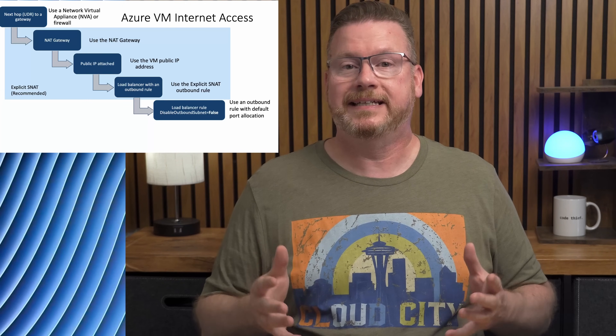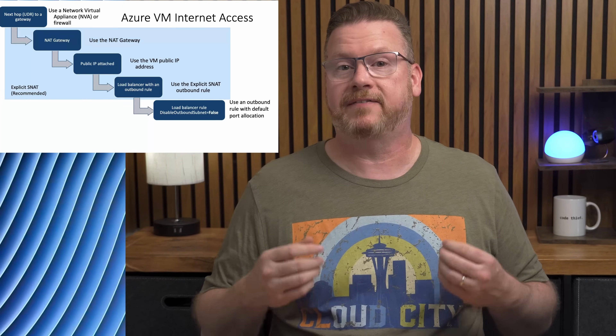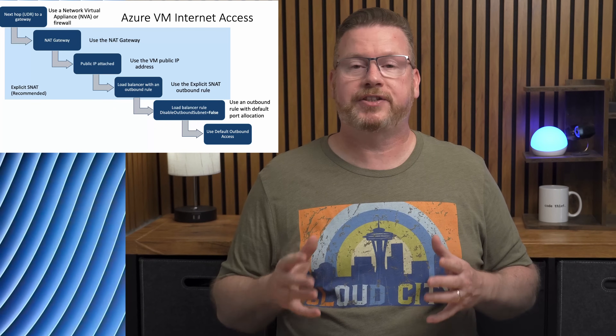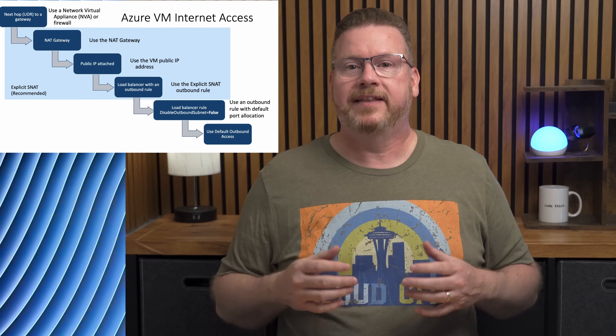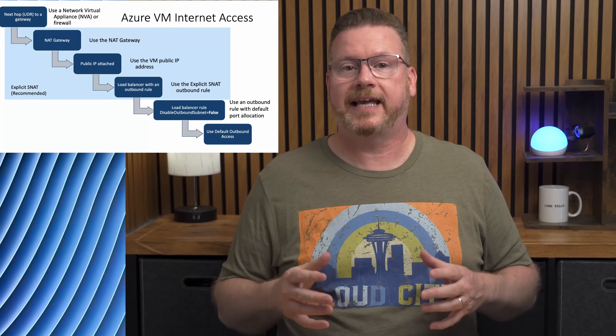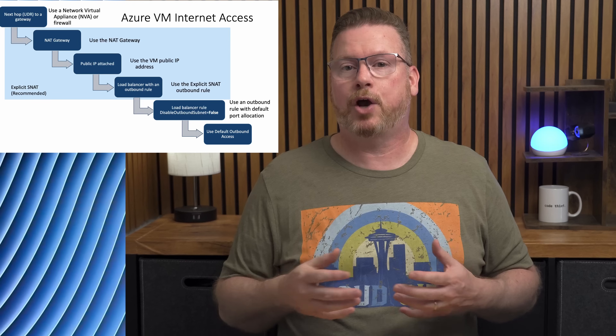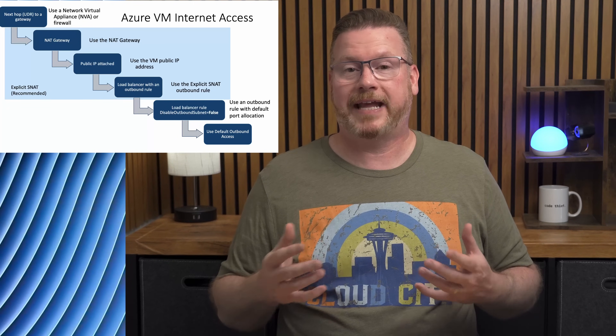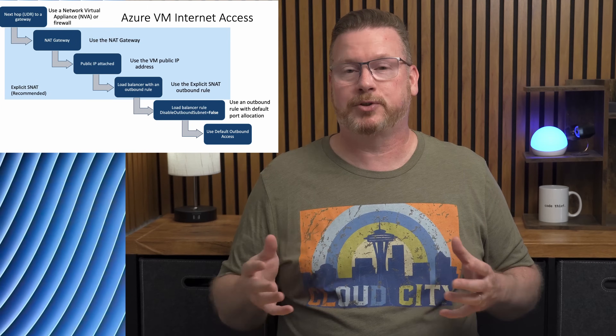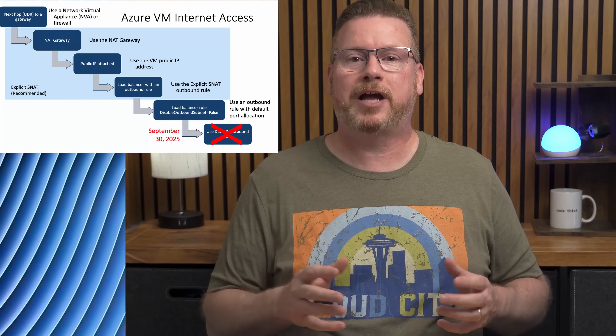Microsoft recommends an explicit method for accessing the internet — one that we define and control. After that, if there are load balancing rules with the disable outbound SNAT rule set to false, that's used. If none of those conditions match, the VM gets implicit outbound connectivity from a public Microsoft IP even if we haven't configured internet access. This is default outbound access, and that could be an issue if we don't want the VM to have internet access. Also, the IP address is not static, could change, is not part of the Azure subscription, and may make troubleshooting difficult.